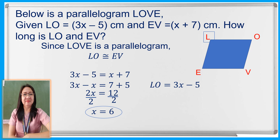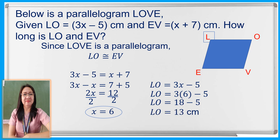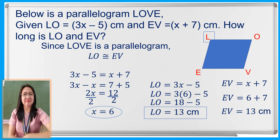Now, let us substitute x equals 6. So L-O is equal to 3 times 6 minus 5. 3 times 6 is 18, minus 5 is 13 centimeters. Let us do the same with side E-V by substituting x equals 6. So E-V is equal to 6 plus 7, which is 13 centimeters. Since L-O equals 13 and E-V also equals 13, they have the same length measure, showing that L-O-V-E is a parallelogram.